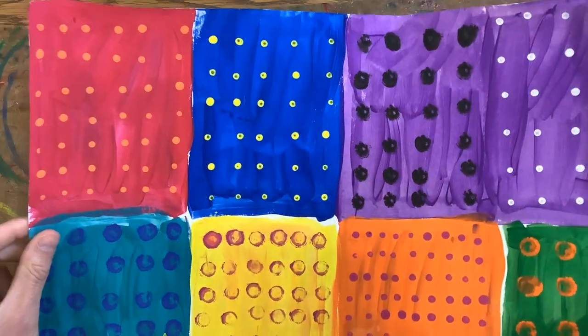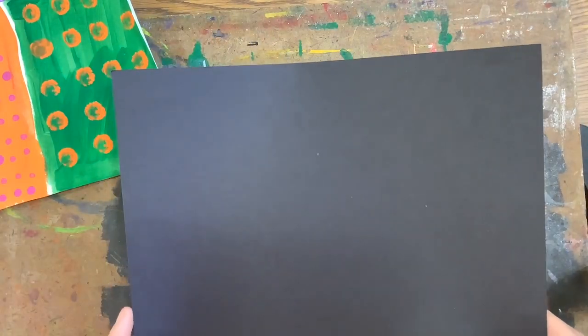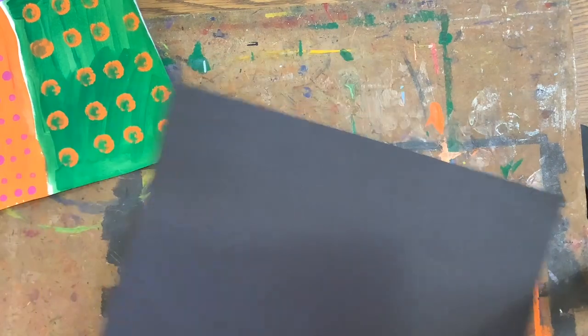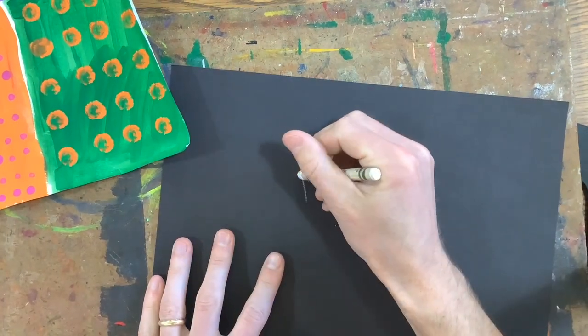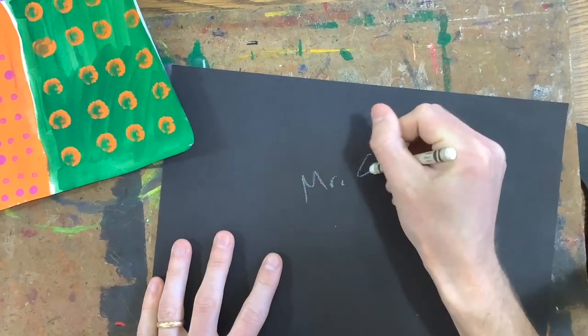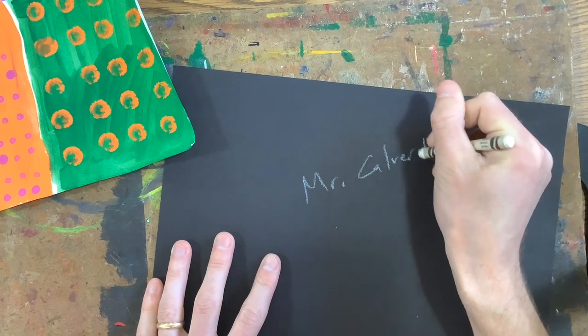Hey artists, today you are going to get back your paintings that we've been working on. Off the supply table you're going to need to get one black sheet of paper - that should be all you need. On the back of the black sheet of paper we need to put our name. I'm gonna do it in white so you can see what I'm doing.